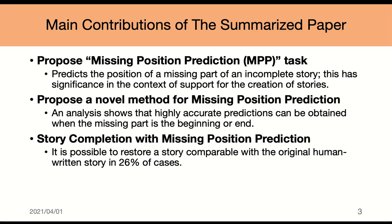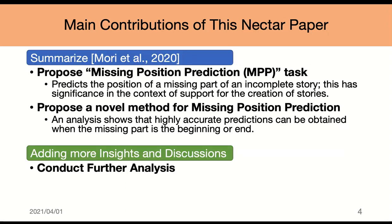There were three main contributions in the previous paper. First, we proposed the Missing Portion Prediction, or MPP, task. Second, we proposed a novel method for missing portion prediction. Third, story completion with missing portion prediction was done as an experiment. The main contribution of this nectar paper is summarizing two of the three main points. MPP is a task to predict the position of the missing part of an incomplete story. We believe MPP has essential meaning in the context of story understanding, story generation, and creative writing assistance. Our analysis shows that highly accurate predictions can be obtained when the missing parts are at the beginning or the end of the story. As a nectar paper, we add more insights and discussions based on the results.